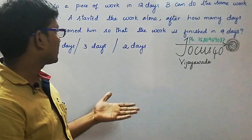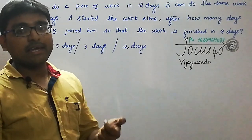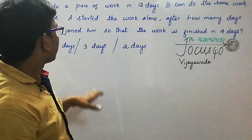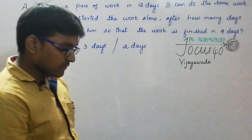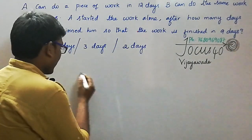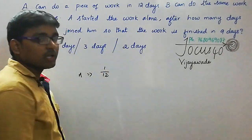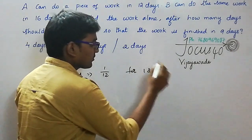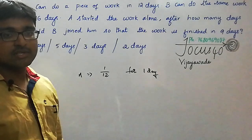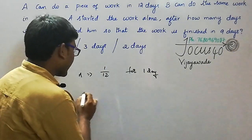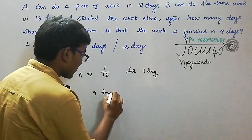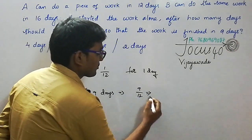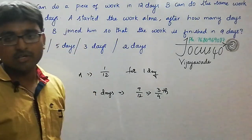That means A stayed in the work from the starting to the end, so A worked for 9 days. First of all by the basic method: A's capacity is 1/12, meaning A can finish 1/12th of the work in 1 day. After working for 9 days, A can finish 9/12, which equals 3/4 of the work.